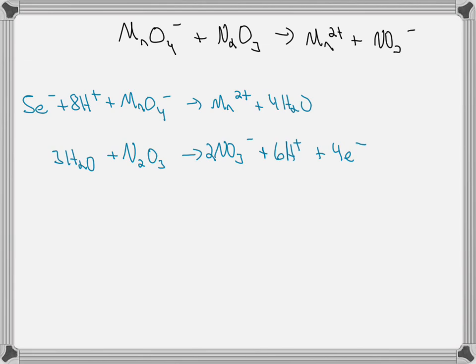Then we need to multiply each of these by a constant so that the electrons cancel. This will require a four on this one and a five on this one.